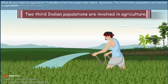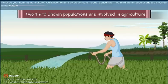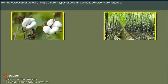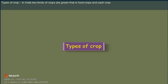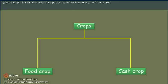What do you mean by agriculture? Cultivation of land by proper care means agriculture. Two-thirds of the Indian population is involved in agriculture. For the cultivation of a variety of crops, different types of soils and climatic conditions are required. In India, two kinds of crops are grown: food crops and cash crops.